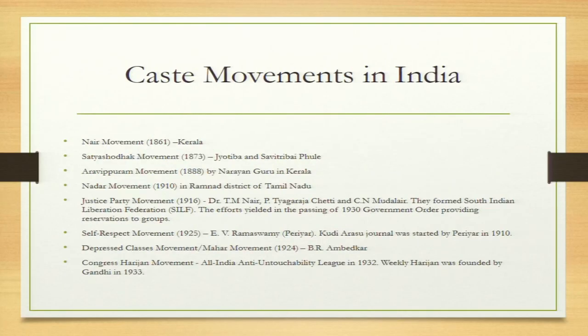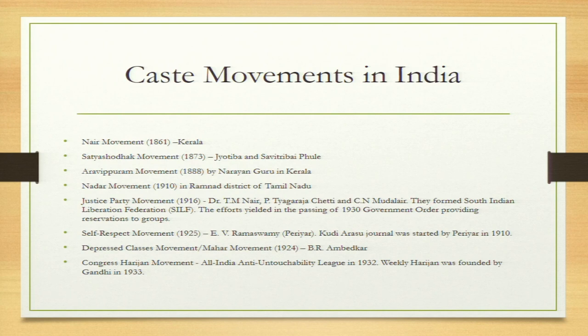Now we come to caste movements. Once the caste system was understood as being based on inequality, these caste movements acted as social reform movements. The caste movements I will discuss are from the pre-independence period, mostly covering different parts of India. On one hand there were social reforms about women's empowerment such as banning child marriage and sati; on the other, caste reforms addressed social inequality. It was recognized that caste-based social inequality was not good for Indian society.